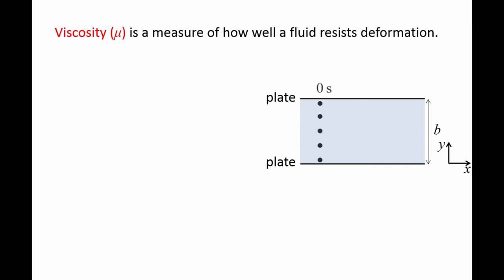We will keep track of five fluid particles that are in a vertical line at time zero. The bottom plate is stationary, but a force is applied to the upper plate which causes a shear stress on the fluid and makes the upper plate move to the right with the velocity v.